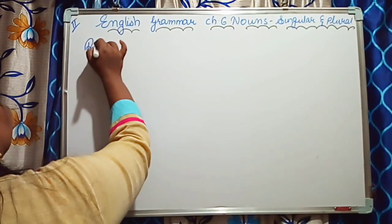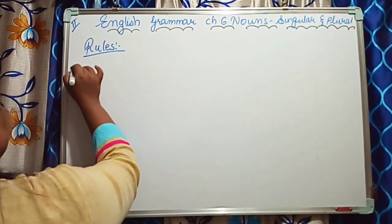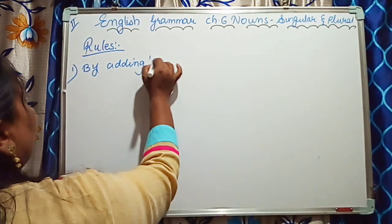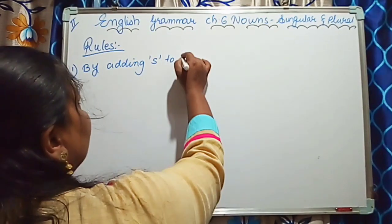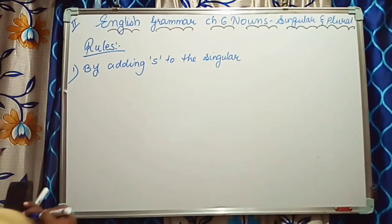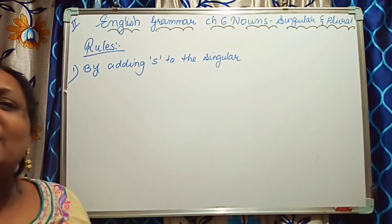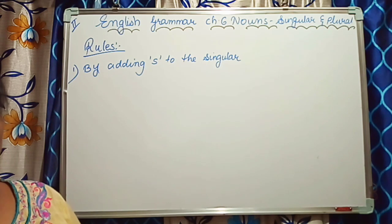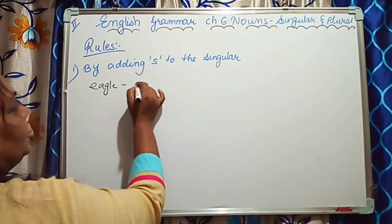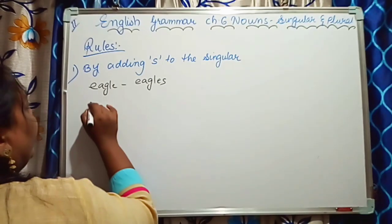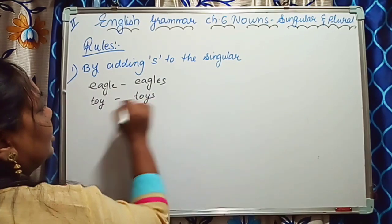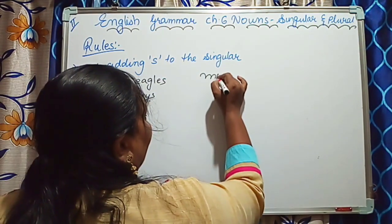Rules number 1: by adding S to the singular. Whatever the singular words are there, we just have to add S. For example, if I write eagle, we just add S — eagles. Then toy becomes toys. Monkey becomes monkeys.